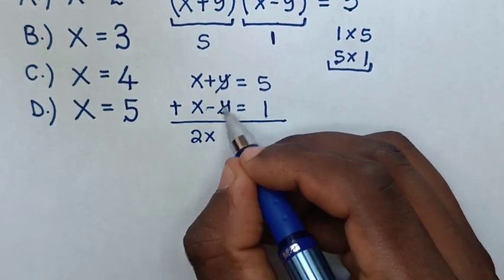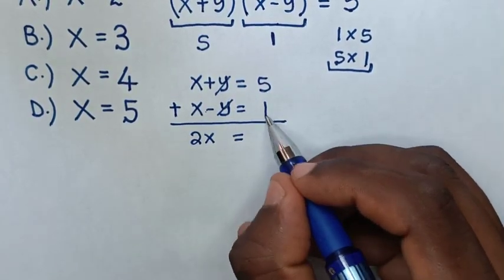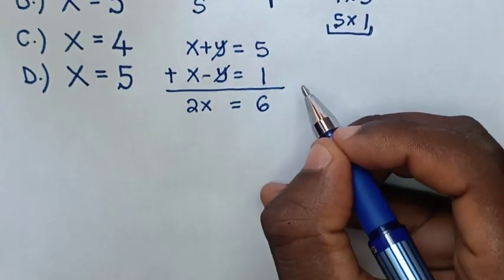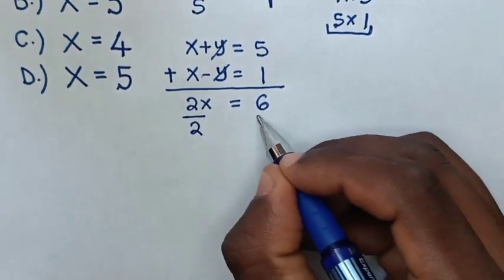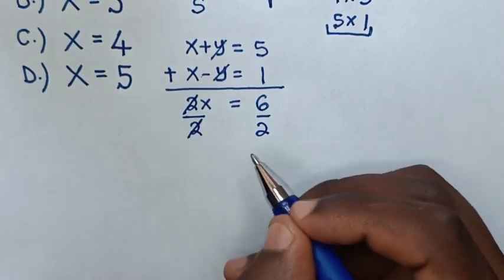Then it will equal 6. To find the value of x, we divide by 2 on both sides, so these cancel.